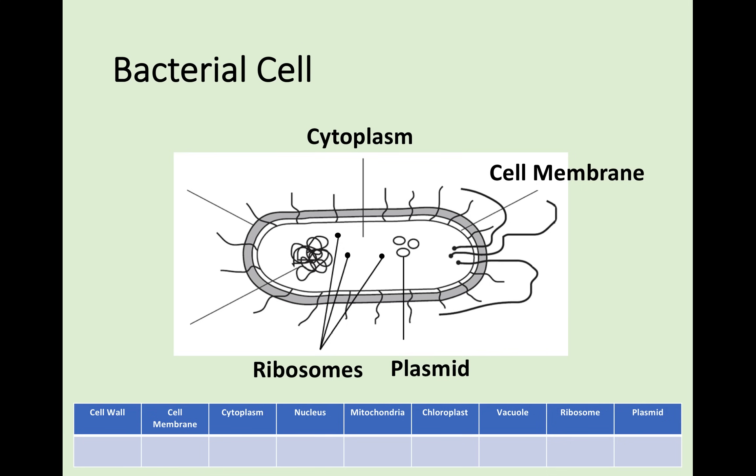Again there are ribosomes. Another object that is unique to bacterial cells are bacterial chromosomes - this strange ribbon-like object in the cell is also some genetic material but is not a nucleus. And as with the plant cell, there is a cell membrane but there is also a cell wall in the bacterial cell, which we did not find in the animal cell.